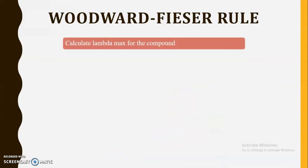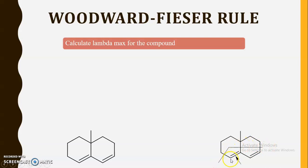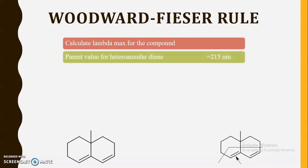The second example: calculate lambda max for the given compound. I request you pause this video, try to solve this question, and once finished play again. First, mark which part of the structure is the diene — this carbon atom, this carbon atom, this carbon atom, and this carbon atom. Now identify whether it is homoannular or heteroannular. By observing the figure you can understand it is a heteroannular diene because both double bonds are present in different rings. So the parent value for the heteroannular diene is 250 nm.